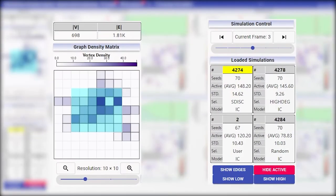On the left side we find the graph density matrix and simulation control views. The former consists of a schematic matrix visualization obtained as follows.